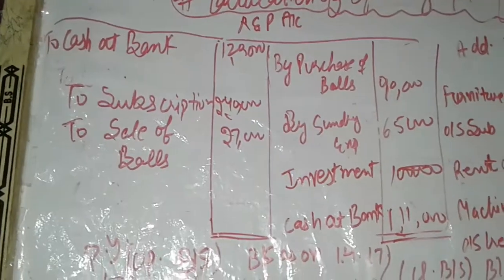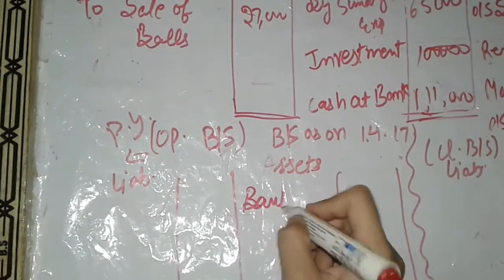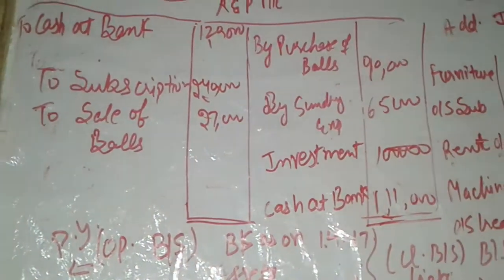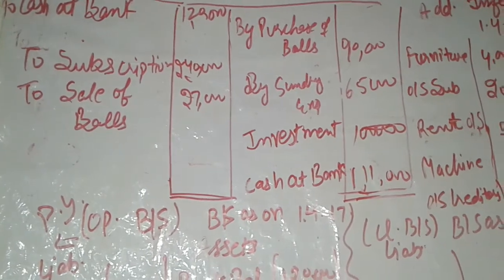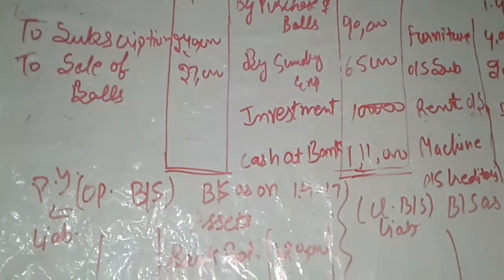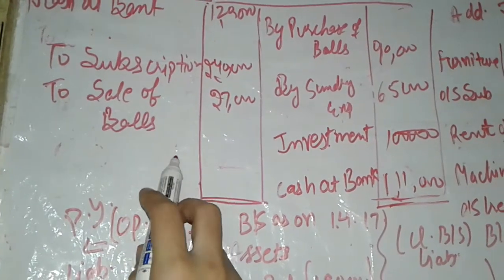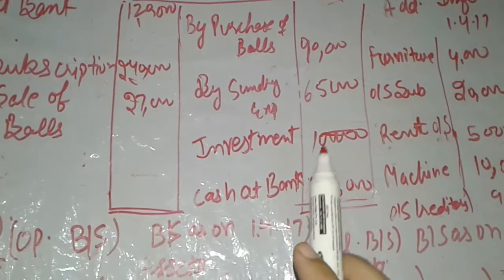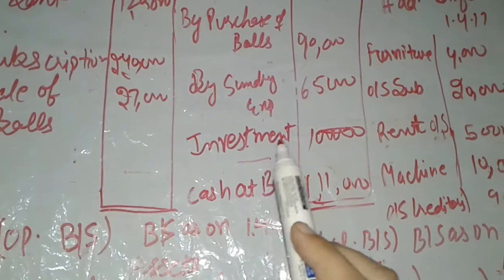I am going to prepare both balance sheets in a combined way. The opening bank balance is Rs. 1,20,000, which is written on the opening balance sheet. Information related to income and expenditure accounts — such as subscription and sale of forms — are ignored since we are only preparing the balance sheets. Similarly, purchases of ball and sundry expenses are ignored.